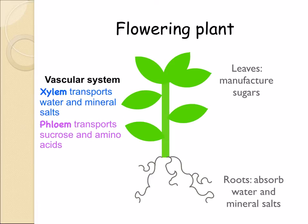The two transport systems in a flowering plant are xylem and phloem. Xylem transports water and mineral salts, and phloem transports sucrose and amino acids. Together these make up the vascular system of the plant.